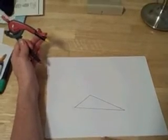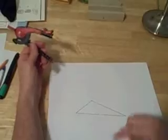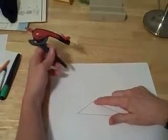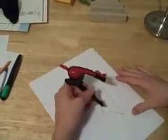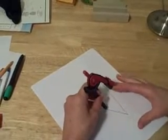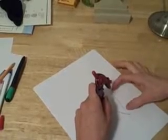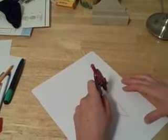So we need to construct three altitudes from this triangle. Let's start with this top vertex here. Now remember to construct an altitude, you have to position your compass on the vertex and you need to cut an arc that will intersect that opposite side two times.